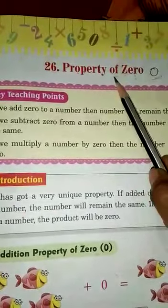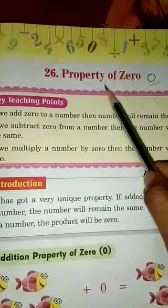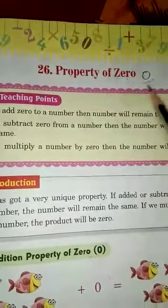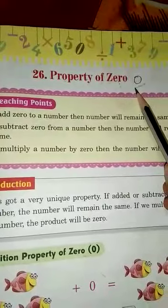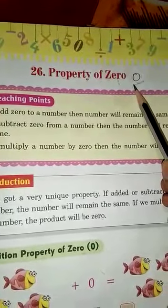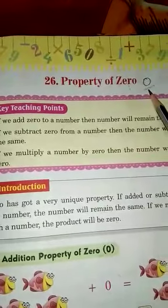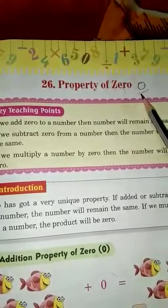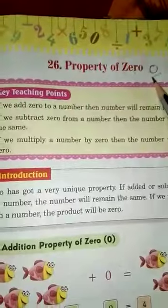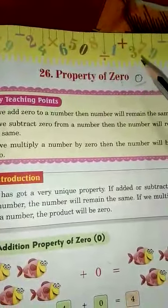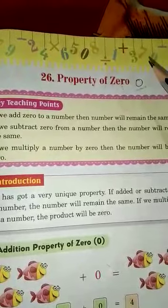Property of 0 is a very interesting and important chapter. This is the symbol of 0. 0 has got a very unique property. Why and how? See here. If we add or subtract 0 to any number, the number will remain the same.